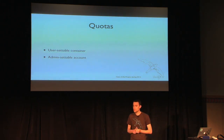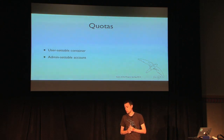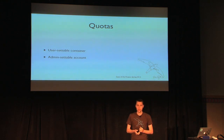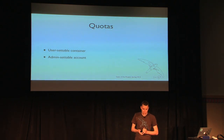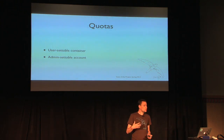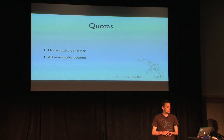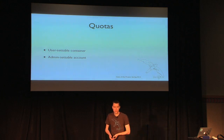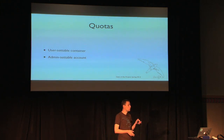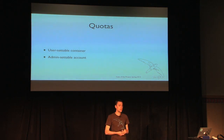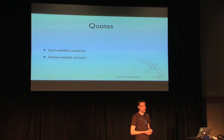Another nice feature added in the last six months is quotas — a somewhat complicated topic. These quotas are specifically designed around what Swift has knowledge about and can act on: the number of objects in a particular container or the aggregate bytes stored within an account or container. There are two kinds of quotas.